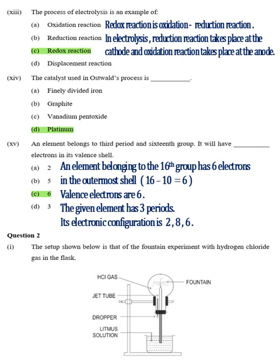Part 15, Answer C, 6. An element belonging to the 16th group has 6 electrons in the outermost shell. 16 minus 10 equals 6. Valence electrons are 6. The given element has 3 periods. Its electronic configuration is 2, 8, 6.